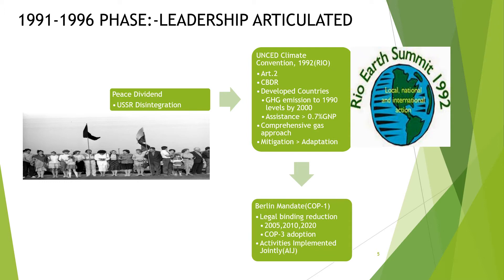The first Conference of Parties took place in Berlin. They released a mandate in which developed countries were told to have a legally binding commitment. They had to reduce greenhouse gas emissions in a phased manner — that is, by 2005, 2010, and 2020 — and every successive phase needed to have more aggressive targets than the preceding phase. The adoption of this legal binding mechanism was deferred until COP3, which was held in Kyoto.